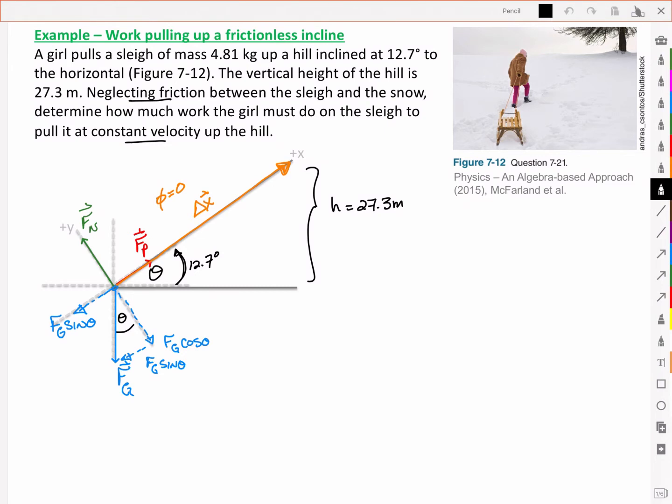In order to determine the work done by the girl, I need to determine that vector Fp. If I look at the sum of my x components of my forces, it tells me that Fp and a negative Fg sin theta is going to be giving me my acceleration, so I use Newton's second law. But then I acknowledge that there's actually zero acceleration here. It's a constant velocity.